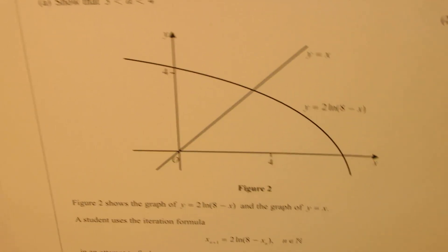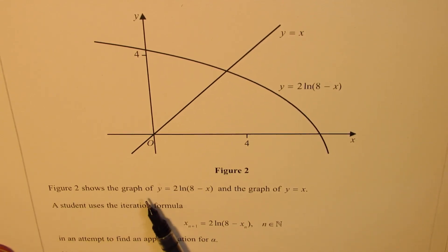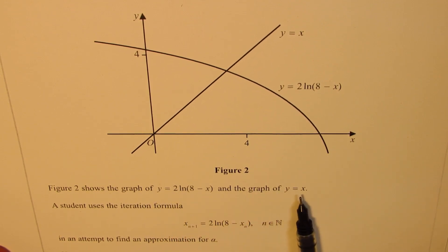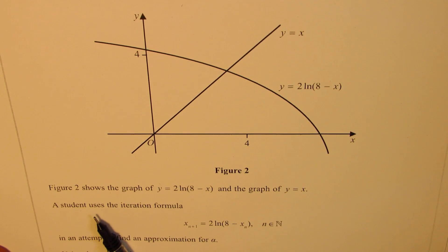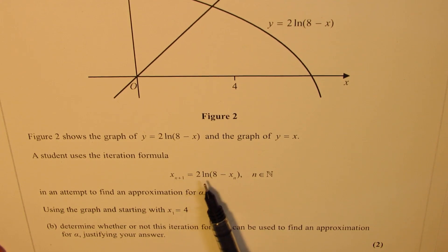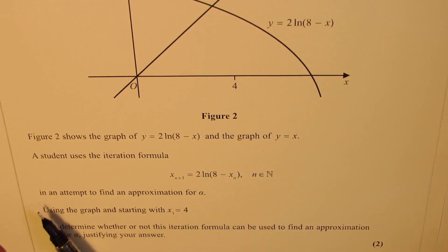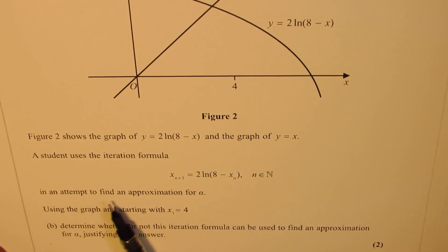Figure 2 shows the graph of y equals 2 ln(8 - x) and the graph of y equals x. A student uses the iteration formula x_n+1 equals 2 ln(8 - x_n), where n belongs to natural numbers, in an attempt to find an approximation for alpha.